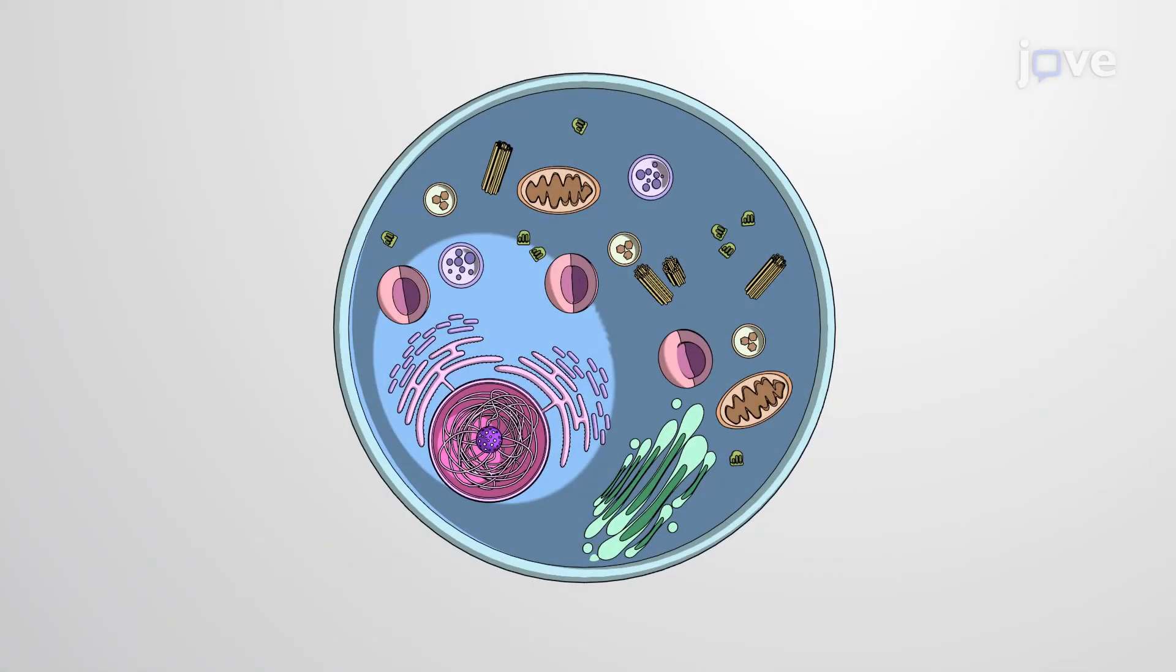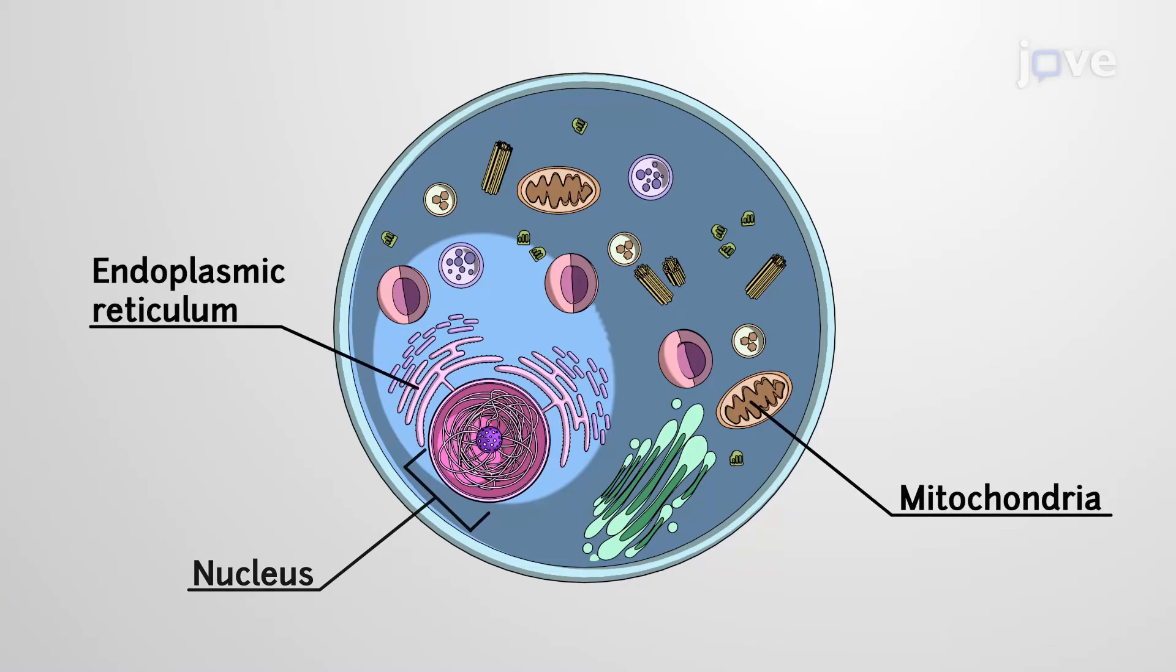In contrast, eukaryotic cells have a membrane-bound nucleus. Their overall structure is more complex and compartmentalized, with specific organelles, specialized subunits like the mitochondria and endoplasmic reticulum, that perform distinct functions.